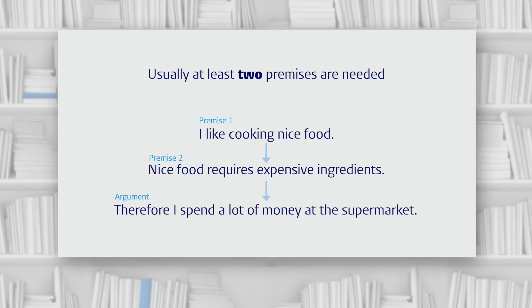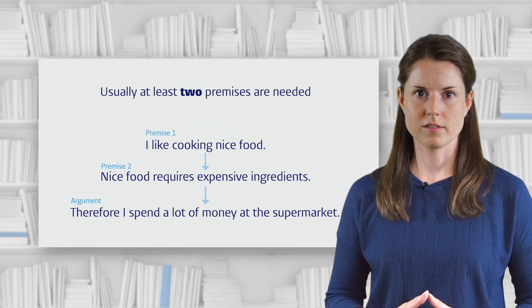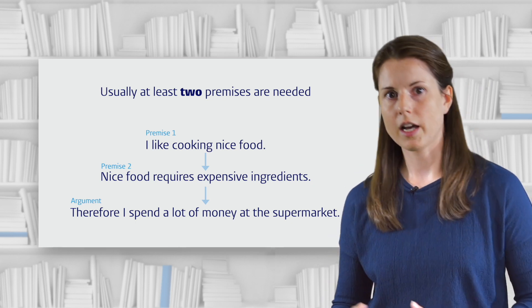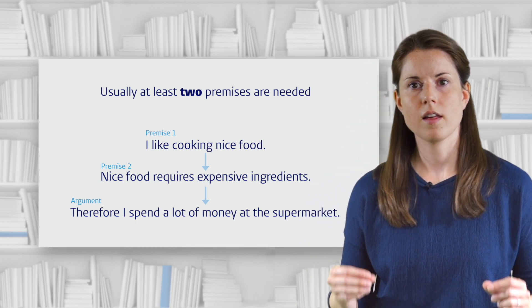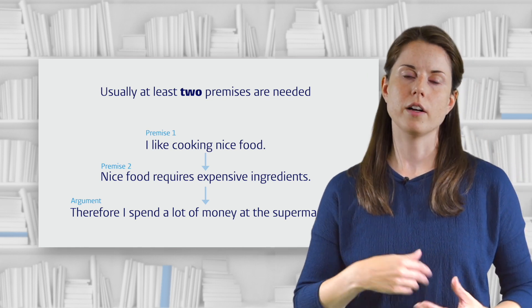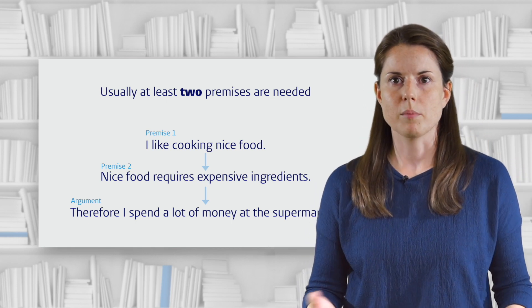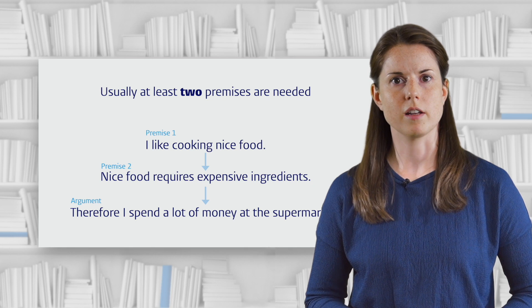When I combine the first two premises — that I like cooking nice food and that nice food requires expensive ingredients — then logically I arrive at the conclusion that I must spend a lot of money at the supermarket. Apart from using logic in your own arguments, it's important to be able to assess how logical other people's arguments are, especially if you want to adopt or refute their points of view.